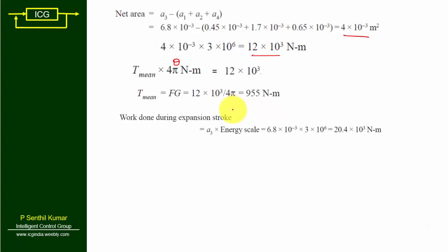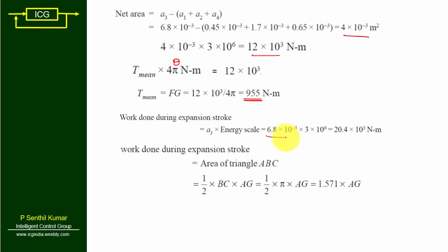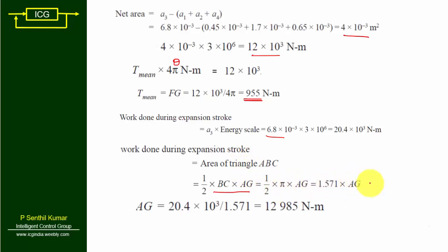Work done during the expansion stroke equals 6.8×10⁻³ m² multiplied by the scale factor, giving 20.4×10³ Newton meters. The area of triangle ABC equals (1/2)·BC·AG equals (1/2)·π·AG equals 1.571·AG. Setting this equal to 20.4×10³ gives AG equals 20.4×10³ divided by 1.571, so AG (T_max) equals 12985 Newton meters.